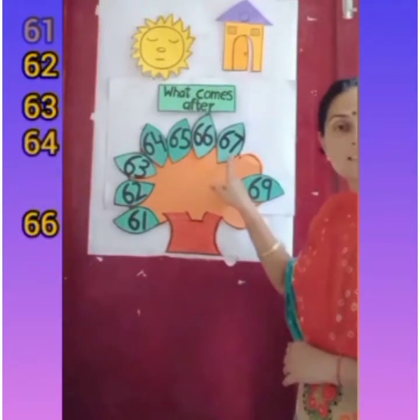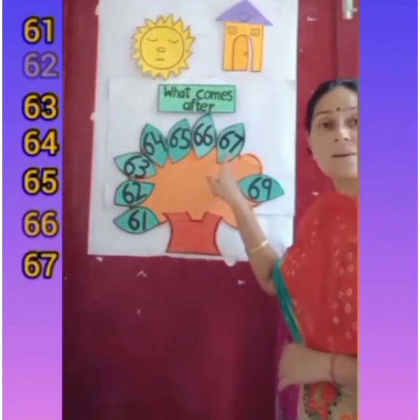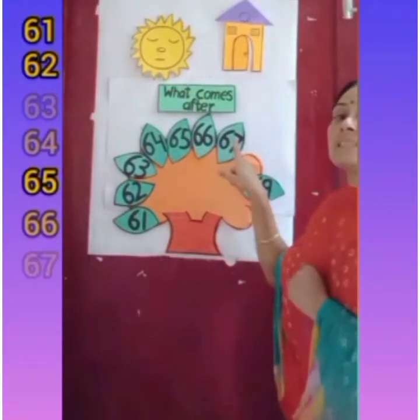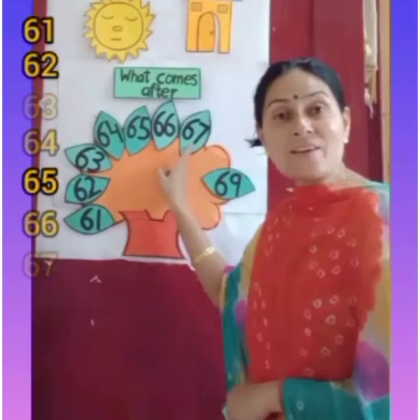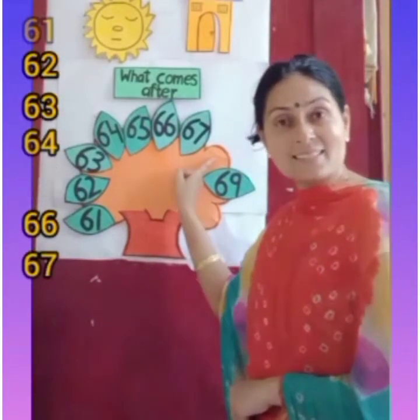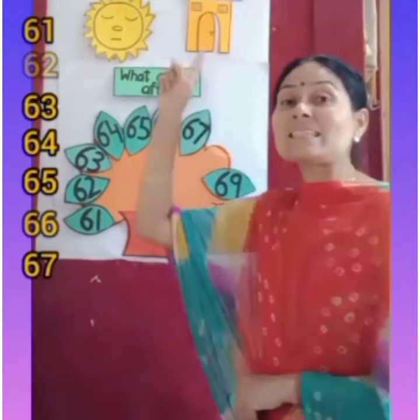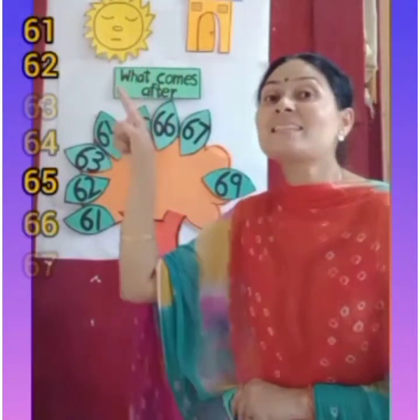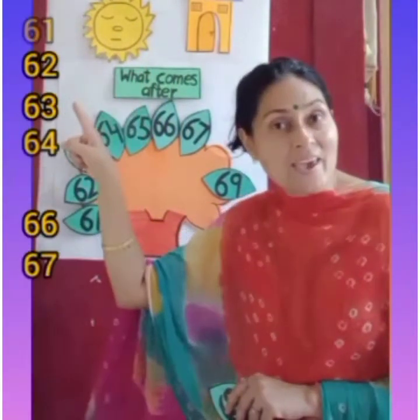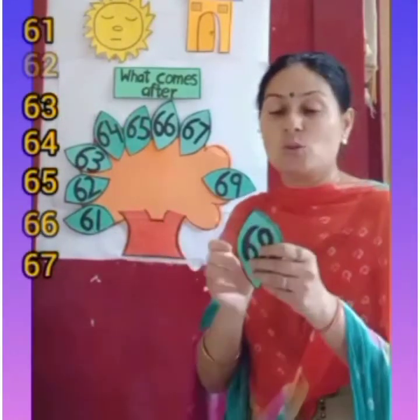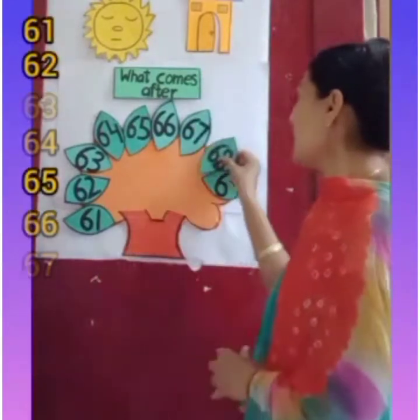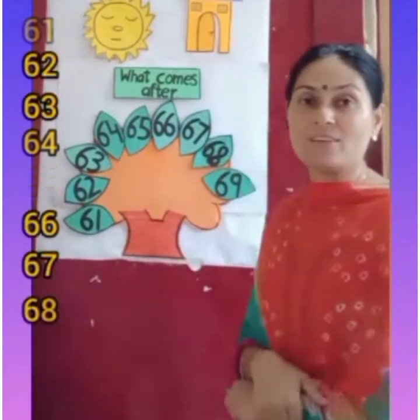Tell me, which number is this? This is 67. Now we have to find only two numbers. After 67, what comes next? 67, 68! So, what number will come after 67? 68. So 68 will come here after 67.